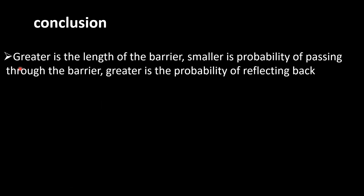Now we can make some conclusions based on our discussion. The first conclusion is that the greater the length of the barrier, the smaller is the probability of passing through it, and the greater is the probability of reflecting. When the length of the barrier is greater, the particle must travel a larger distance inside the barrier, increasing the chance that it decays inside, so there is less probability that the particle will tunnel through to the other side.